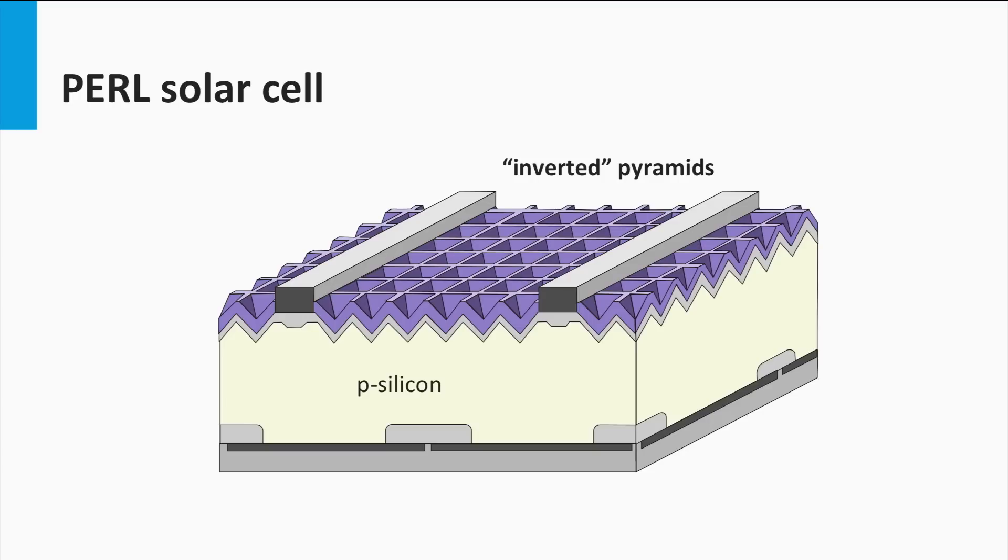Secondly, the inverted pyramid structures are covered by a double layer anti-reflection coating, which results in an extremely low top surface reflection. Often a double layer coating of magnesium fluoride and zinc sulfide is used as an anti-reflection coating.